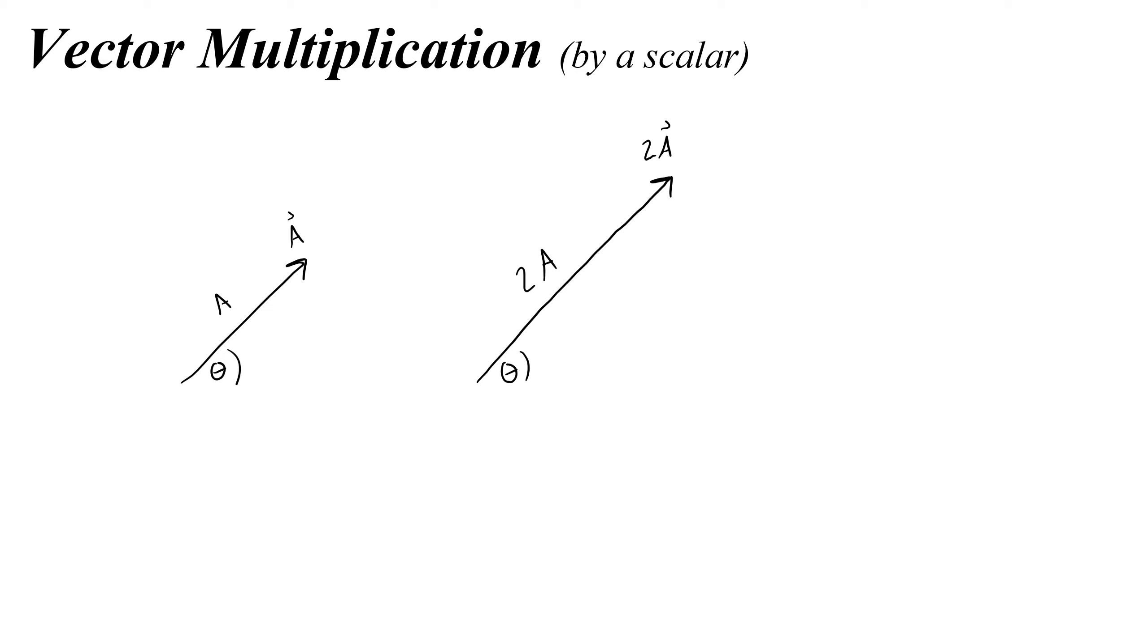In fact, things that do this to vectors are called scalars because they scale the vector by some factor. So this is scaling our vector up. You can also multiply by a fraction and scale it down. Let's do some examples.